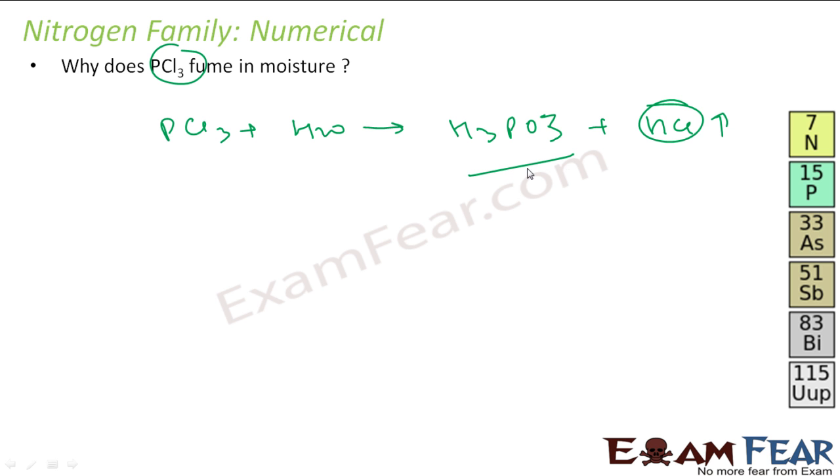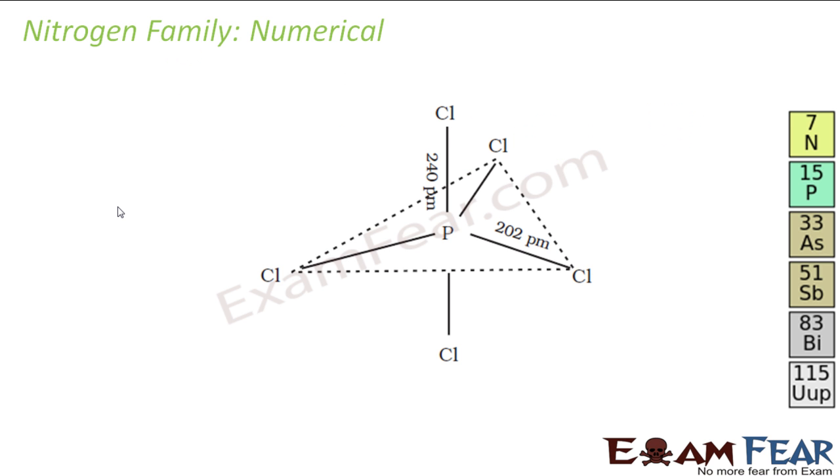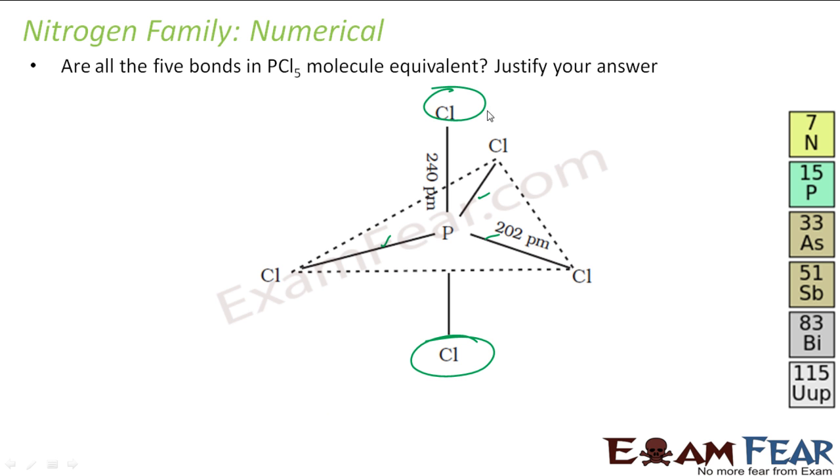The question is: are all five bonds in PCl5 equal? No, we have seen that these bonds are small - 202 picometer - and these two bonds are big, that is 240 picometer. Why so? This is, as I told, a trigonal bipyramidal structure, and these chlorines suffer more repulsion because they are head-to-head, but these suffer less repulsion.